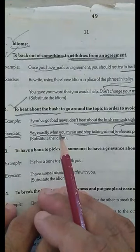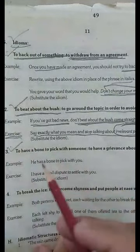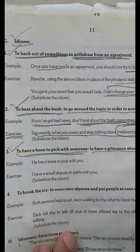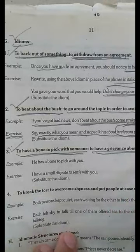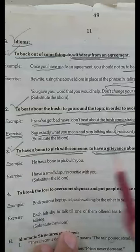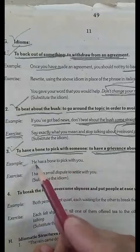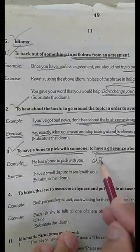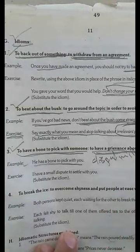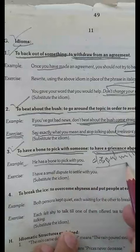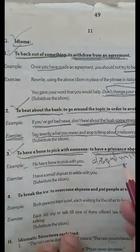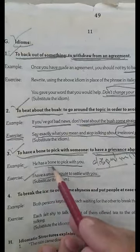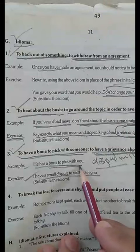Third is 'to have a bone to pick with someone.' This means to have a grievance about something. For example: He has a bone to pick with you. It means he has a dispute with you, or he has an argument with you, or he has a problem with you. Exercise: I have a small dispute to settle with you. It means he has a bone to pick with you. He has a problem, he has a dispute to settle with you.